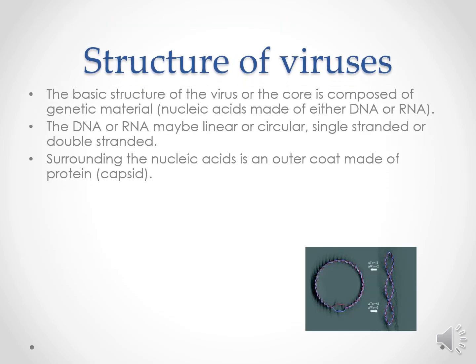The basic structure of the virus: Nucleic acid is the core component of genetic material, made up of either DNA or RNA. The DNA or RNA may be linear or circular, single-stranded or double-stranded. Surrounding the nucleic acid there is an outer coat made up of protein which is called the capsid.